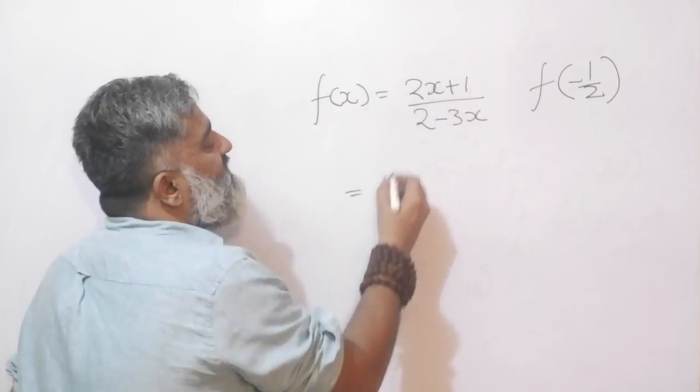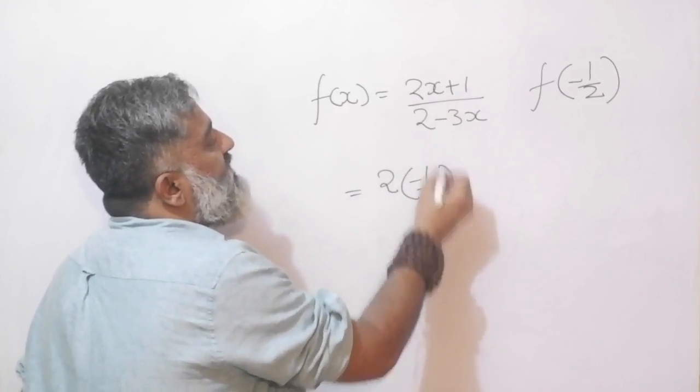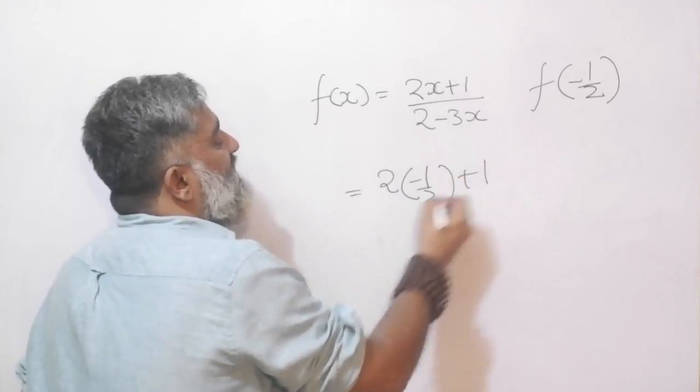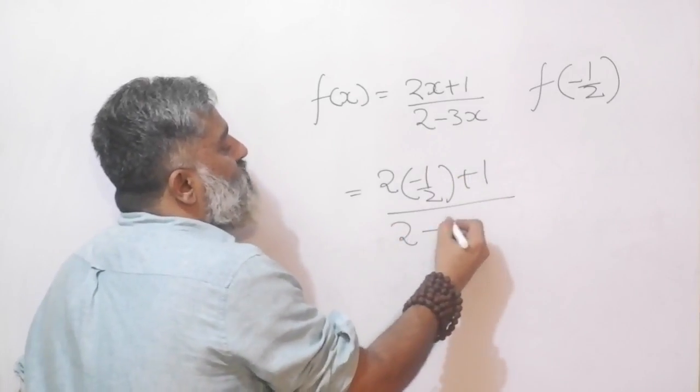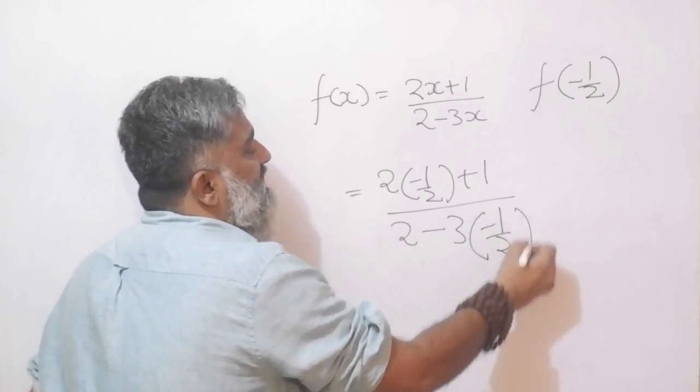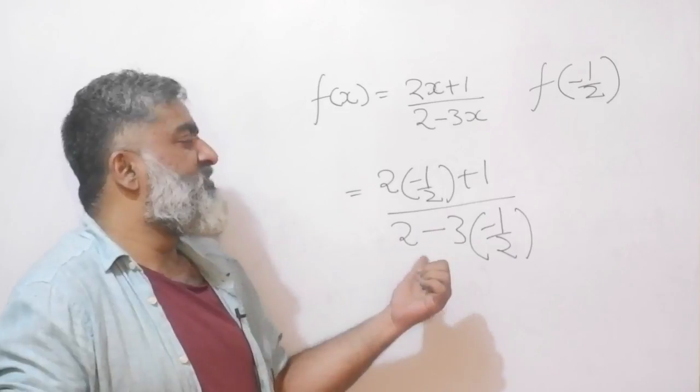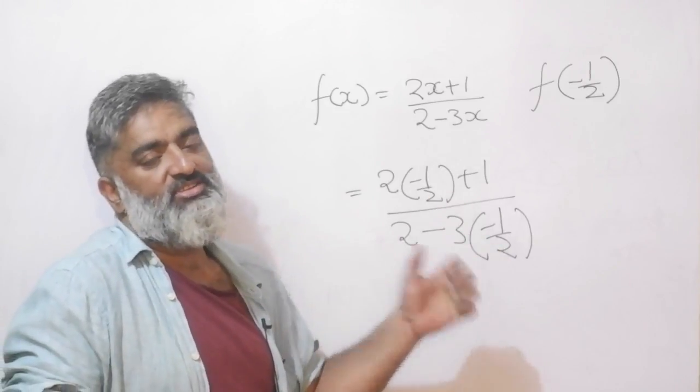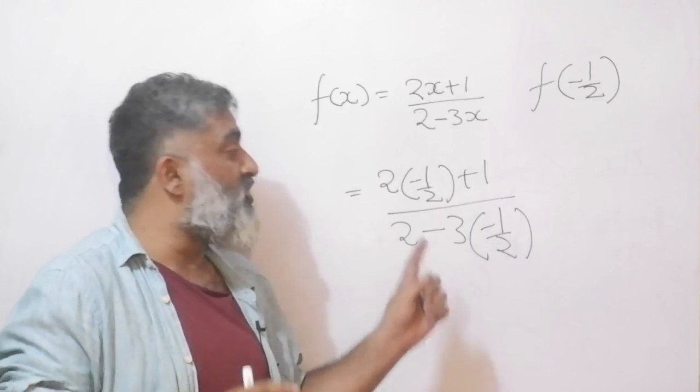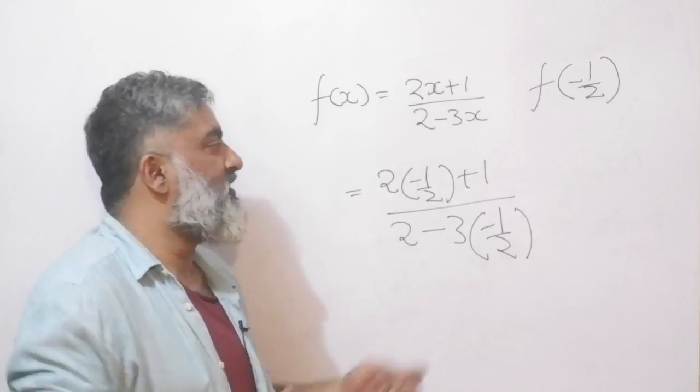Play the same game, wherever there is x put minus 1/2. So 2 into minus 1/2 plus 1 divided by 2 minus 3 into x, and instead of x I will put minus 1/2. I am assuming calculating this is not going to be too much of a challenge. Hit pause and figure out the exact value for yourself.